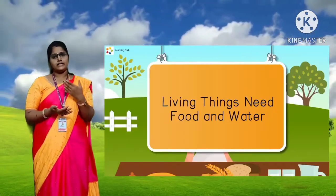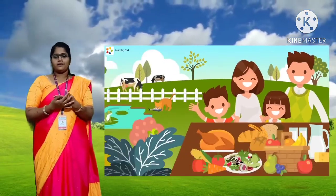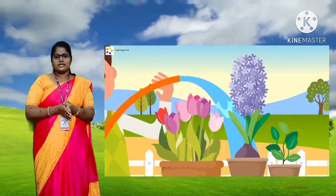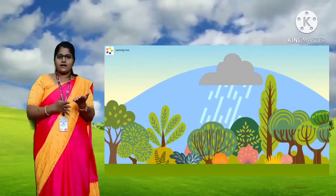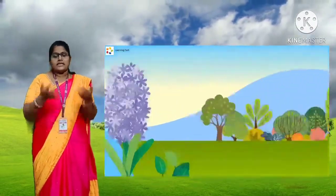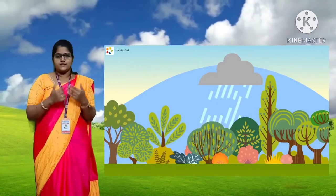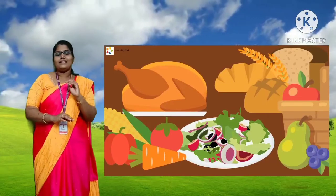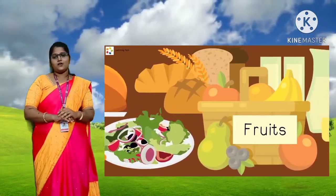One common characteristic of all living organisms: do all living things need food? Yes, of course — all living organisms need food. Plants, animals, and humans all need food. Plants prepare their own food through the process of photosynthesis. Animals depend on plants and other animals for their food. Food gives energy, and organisms need energy for their life processes to grow. This is a common characteristic.